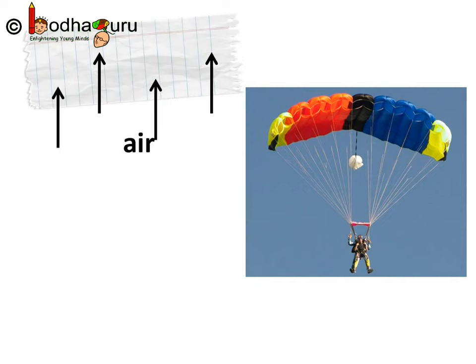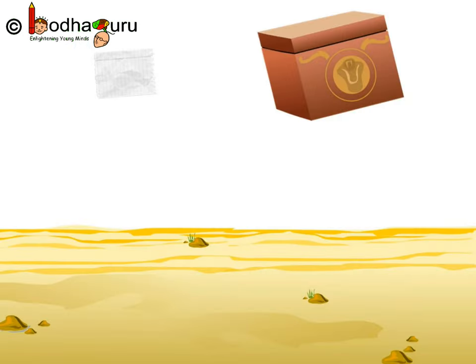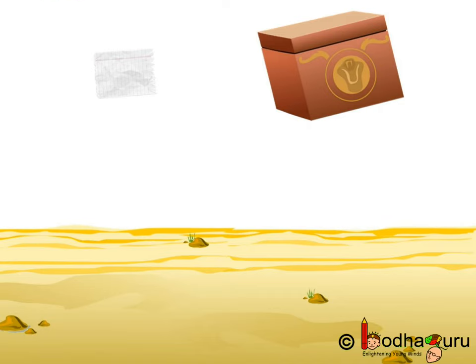If there were no air resistance, then gravity would cause everything to fall at the same rate. No matter what object you dropped, that is a feather or a rock, it would hit the ground at exactly the same time assuming you dropped it from the same height.